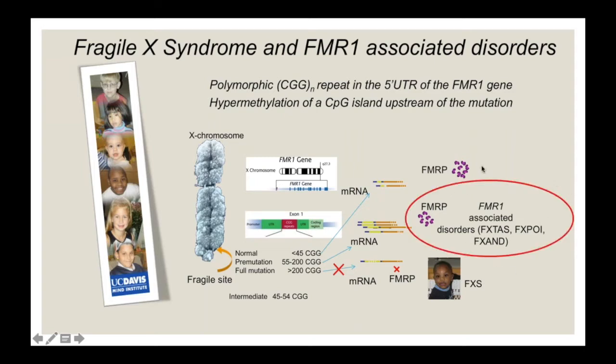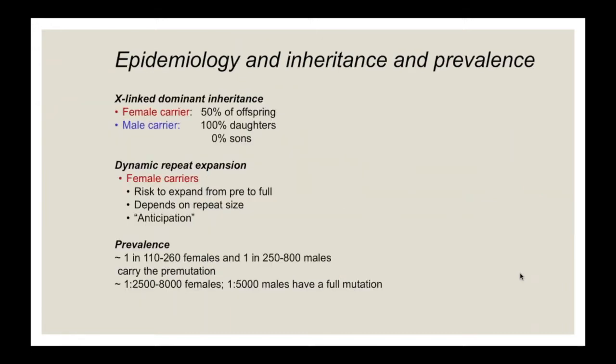We're going to concentrate on premutation carriers, who present with a number of different phenotypes. The inheritance is X-linked dominant because the gene is on chromosome X. All female carriers have 50% of offspring who are carriers. If the premutation is carried by the male, 100% of daughters will be obligate carriers, while 0% of sons inherit it since they receive the Y chromosome. It's a dynamic repeat expansion, so there is high risk to expand from premutation to full mutation in the next generation when the carrier is the mother.